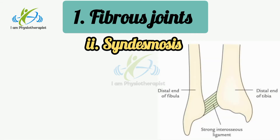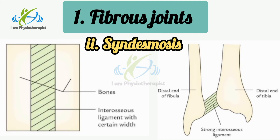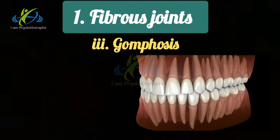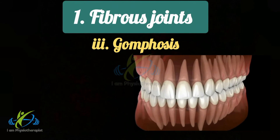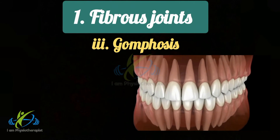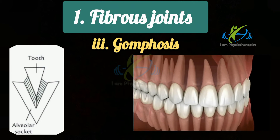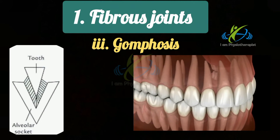Syndesmosis are special joints where bones are connected by an interosseous ligament. For example, interosseous radio-ulna joints and inferior tibiofibular joint. Gomphosis, also known as peg and socket joint, are specialized fibrous joints involved in fixation of teeth in alveolar sockets of the mandible and maxilla.